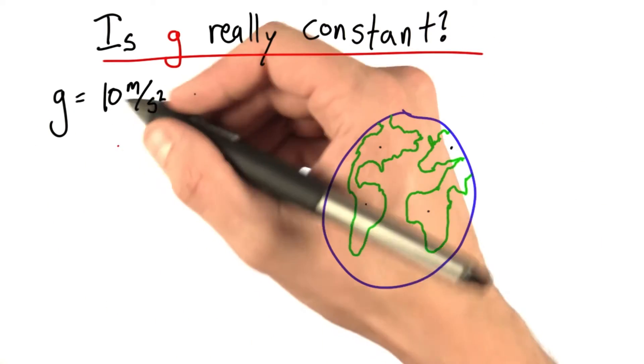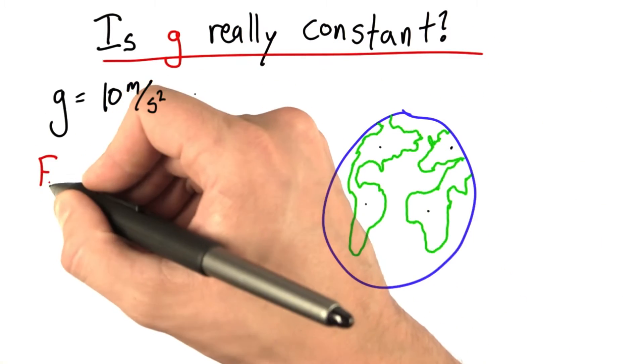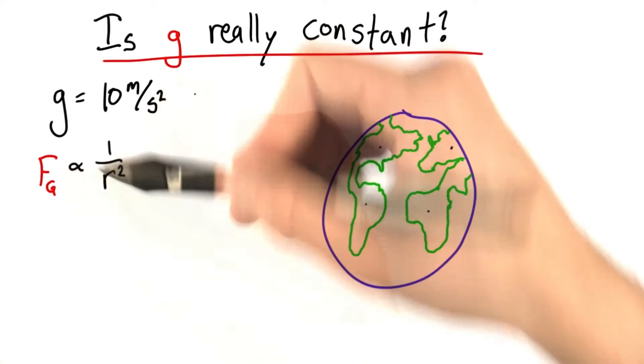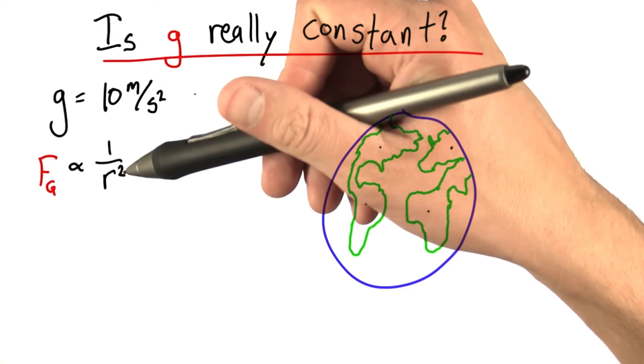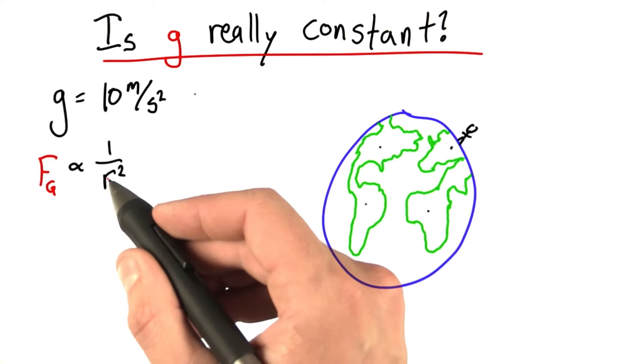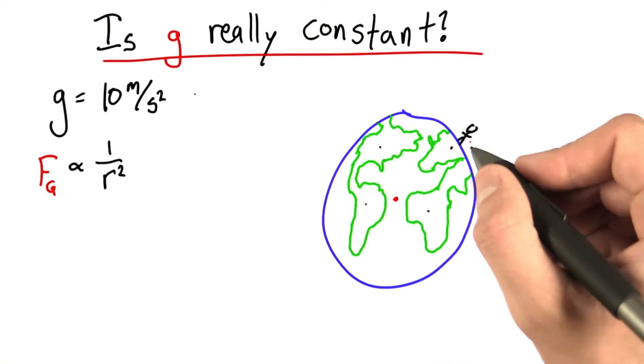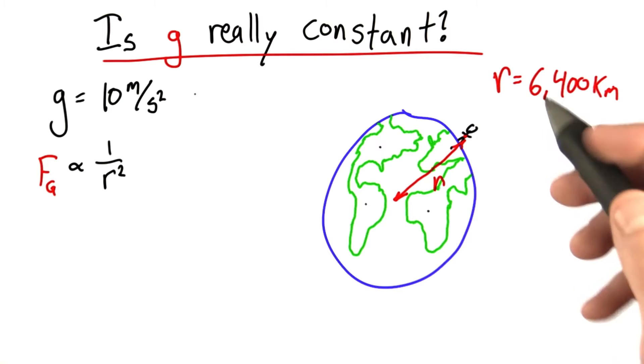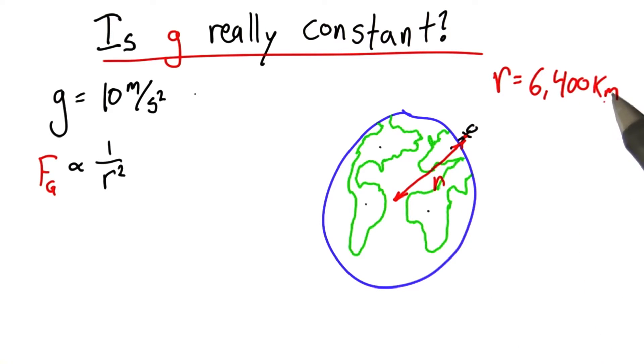We know this gravitational acceleration is due to a gravitational force, which we can call Fg. And we've talked about how that force is proportional to 1 over r squared. Now when we stand on the earth, the r that we're talking about is actually the distance between the center of the earth and the center of our bodies. And the distance is about 6,400 kilometers. That's the radius of the earth.